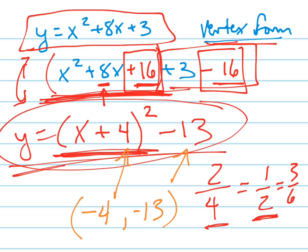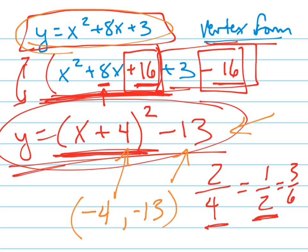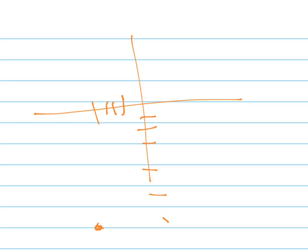To graph this equation, it's very easy if you have vertex form, because you know it's got a vertex at negative 4, negative 13 — so negative 4, negative 13 down there. And it opens up. It also has a y-intercept of 3, so the y-intercept is up there.